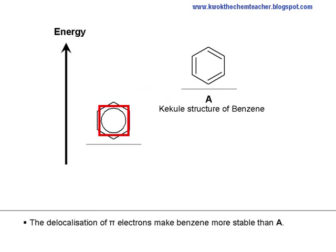The delocalization of pi electrons makes benzene more stable than A, where A shows a localization of pi electrons. This teaches us that localization of pi-bonded electrons is less stable.